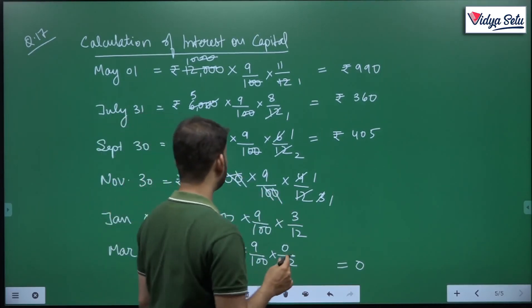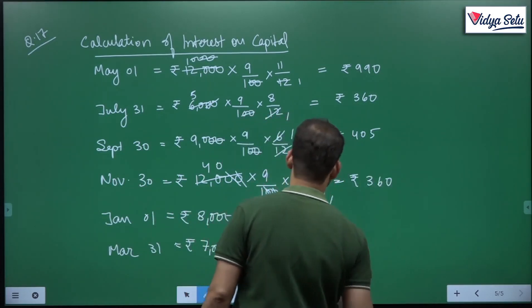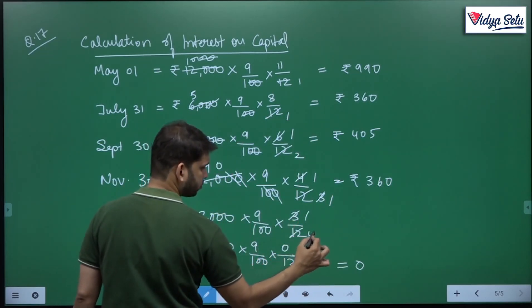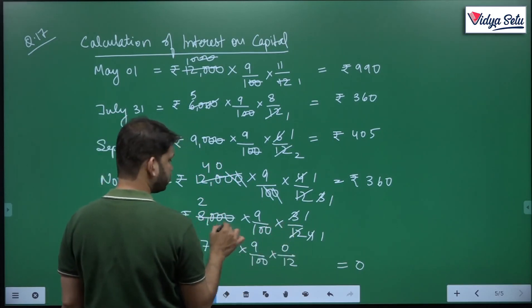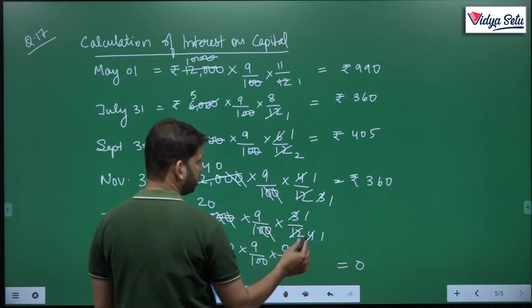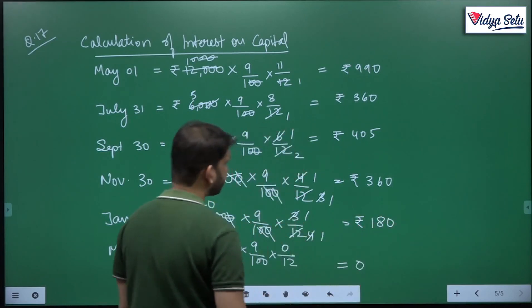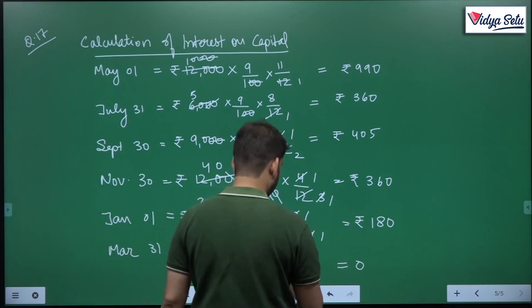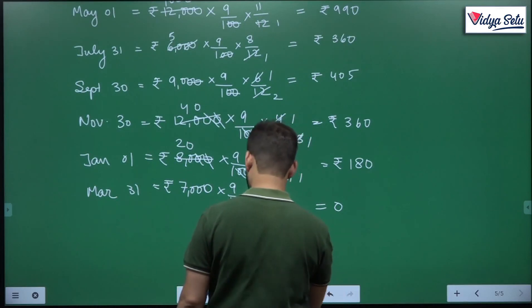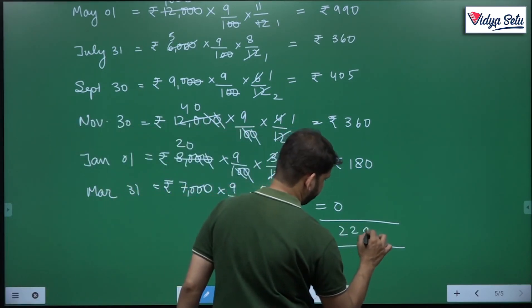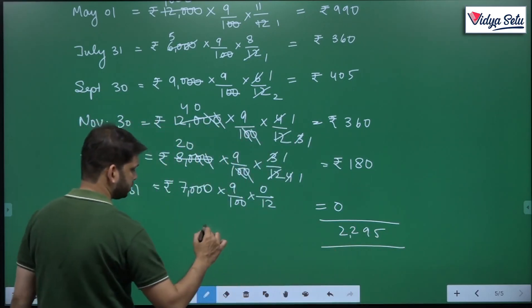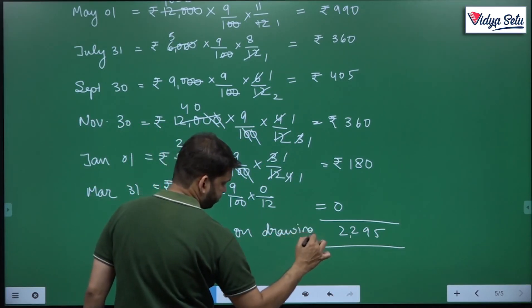Then 12,000 × 9% × 4/12 = 360. And 8,000 × 9% × 3/12 = 180.